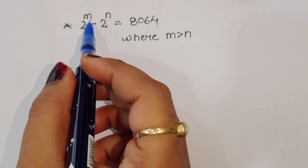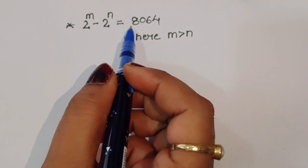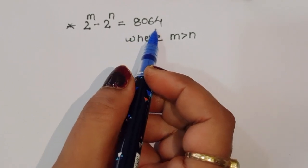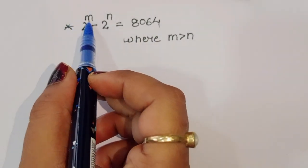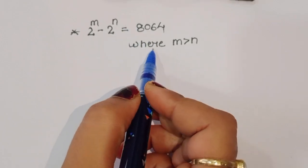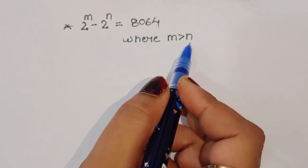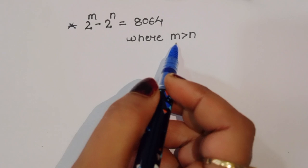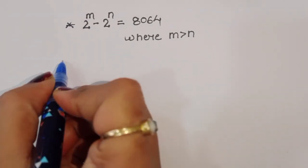The question is: given 2 power m minus 2 power n is equal to 8064, we have to find out the value of m and n, where the condition is m is greater than n. Let's see the solution.